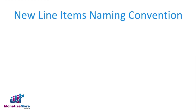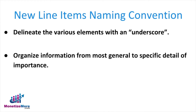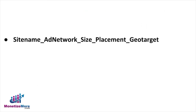When it comes to naming new line items, we've found it's absolutely crucial to delineate the various elements with an underscore and organize the information from the most general to the most specific detail of importance. The following format works best: site name, underscore ad network, underscore size, underscore placement name, underscore geotarget.